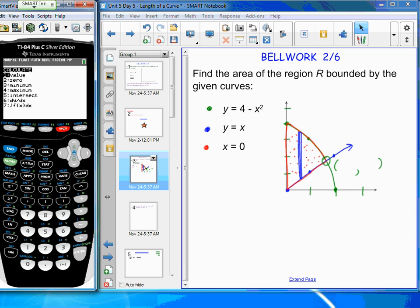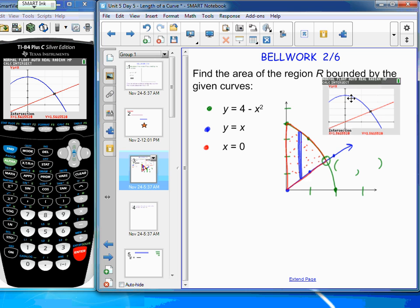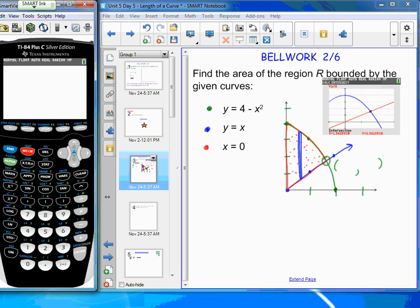Let's go ahead and see if we can't pin down that point of intersection. Second, calculate, 5, intersect, first curve, enter, second curve, enter, guess, enter. Looks like 1.56155, et cetera. So that's what I'll go ahead and use, and I'll store that in my home screen. So 1.56155 to 8, store alpha A.